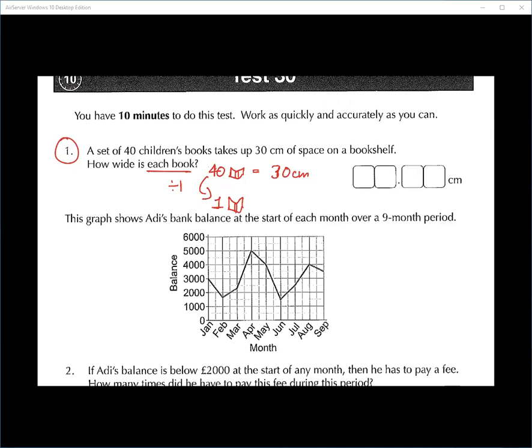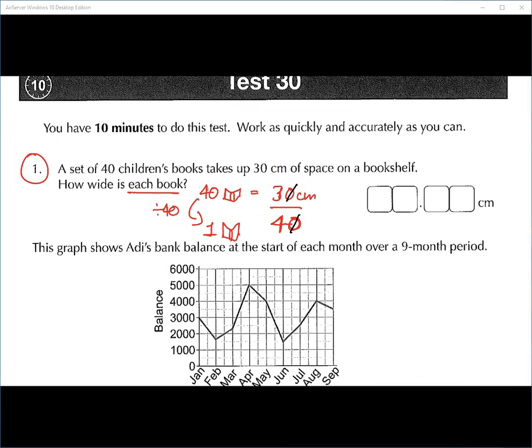Divide by 40. Yeah, you divide it by itself, so what you do on the left, you have to do it on the right-hand side. So 30 divided by 40, divide that by 10, divide that by 10, that gives you 3 over 4. So what's three quarters of a centimetre in decimal?